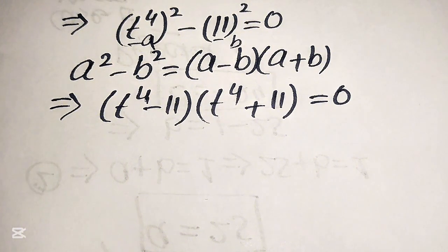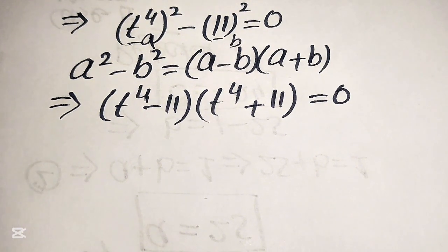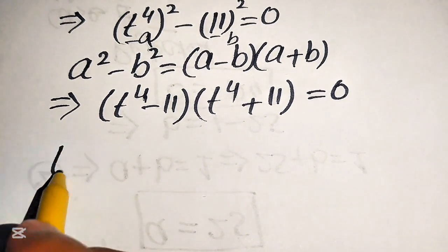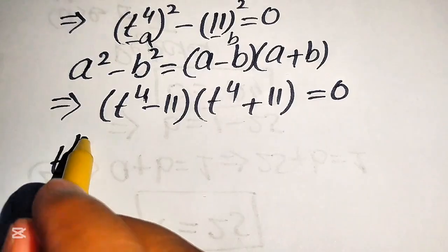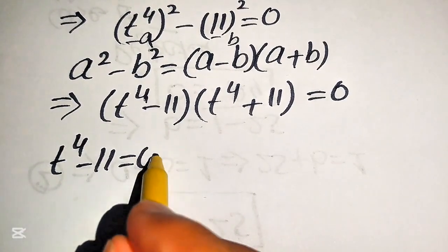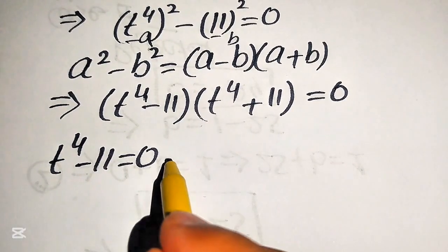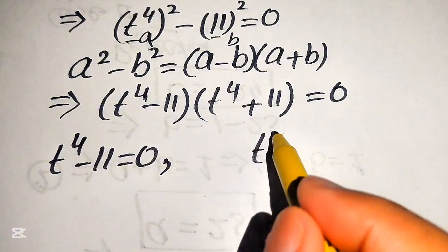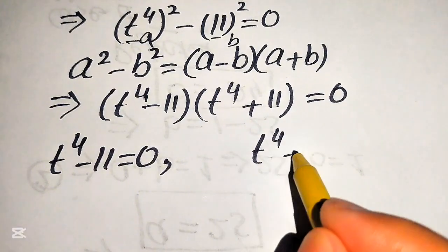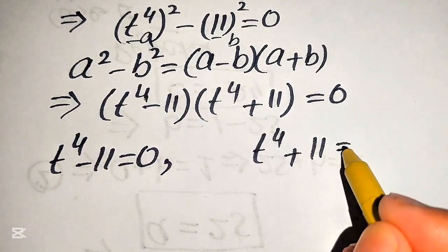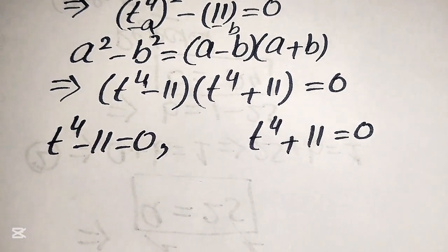In the next step we divide this equation into two cases. The first case is t to the power of 4 minus 11 equals 0, and the second case is t to the power of 4 plus 11 equals 0.